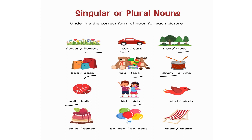Bird or birds — bird, because only one bird is flying. Cake or cakes — how many cakes are in front of you? Only one, so: cake. Agar two hoti ya two se zyada hoti, toh hum cakes pe underline karte. Balloon or balloons — how many balloons are there? One, two, three, four, five — more than one, so it's plural in number: balloons.